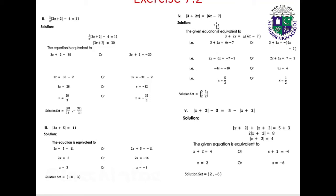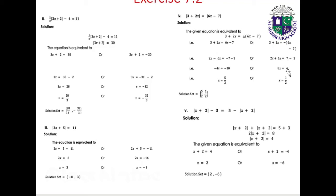Part 4: |3x plus 2| equals |6x minus 7|. The equation is equivalent to 3x plus 2 equals 6x minus 7 or 3x plus 2 equals minus(6x minus 7). From the first: 2 minus 6x equals minus 7 minus 3, giving minus 4x equals minus 10, so x equals 5/2. From the second: 3x plus 2 equals minus 6x plus 7, giving 8x equals 4, so x equals 1/2. Solution set: {5/2, 1/2}.